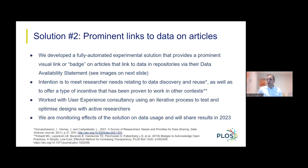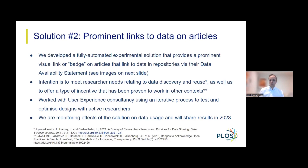The second solution we are testing is a prominent visual link or a badge that appears on published articles. This solution has two objectives: the first is to encourage or incentivize more researchers to share data in a repository. The second goal, importantly, is to increase access to and ultimately reuse of research data linked to PLOS articles. To achieve these two goals, we developed a fully automated experimental solution that provides a prominent visual link on published articles linking via their data availability statement to data shared in repositories.